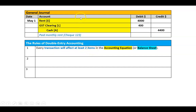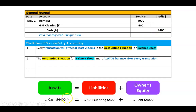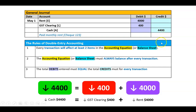Rule one: our transaction affected three items — rent, GST clearing, and cash — so we're good. Rule two: rent expense decreased owners' equity by $4,000; GST clearing liability went down $400; and cash (an asset) went down $4,400. The balance sheet balances: −$4,400 = −$400 + (−$4,000). Rule three: total debits were $4,000 + $400 = $4,400, and total credits were $4,400 — they match. Note that debits can be split across multiple lines while credits are a single entry; all that matters is that the totals are equal.